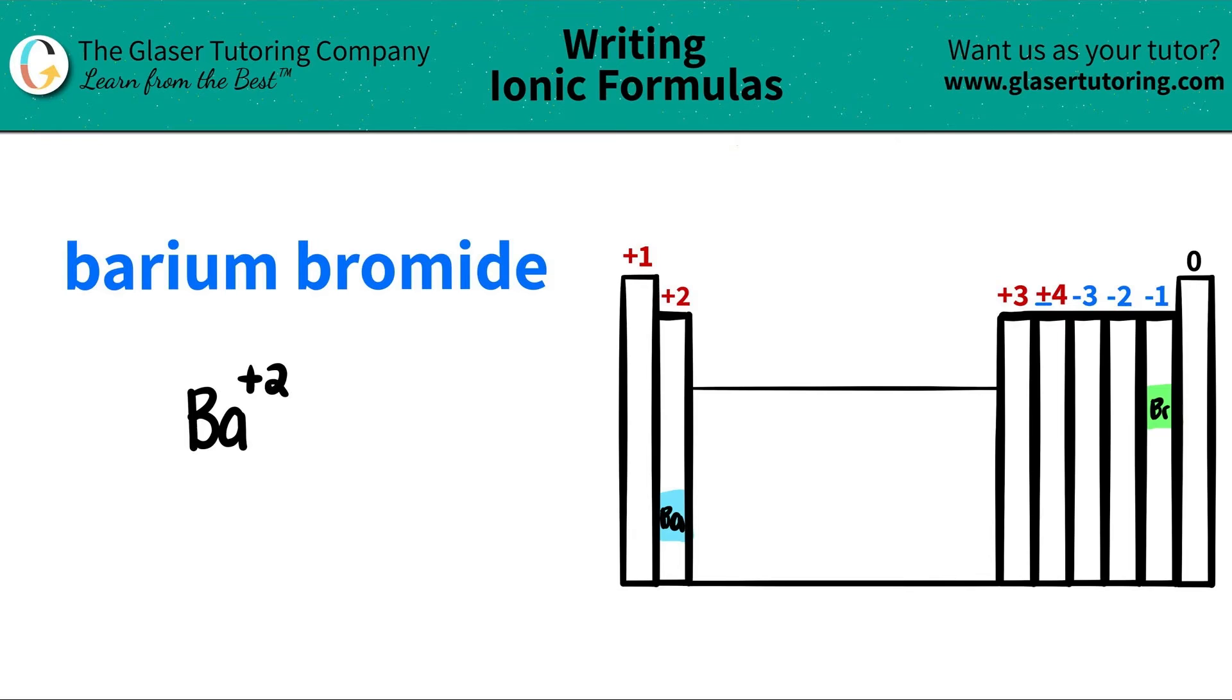Bromine is a halide, right? And all halides are in this little group here, which always has a negative one charge. So I'm going to write down that I have Br and I have a negative one charge for that.